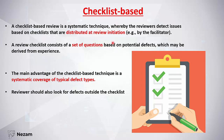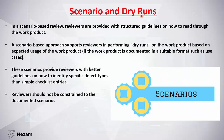The checklist-based review is a systematic technique where a checklist is distributed at review initiation — the second step of the review process — for example by the facilitator. The checklist contains questions based on potential defects derived from experience. During review, reviewers try to find the answers to these questions and identify the defects listed. The advantage is systematic coverage of typical defect types. Reviewers should also think outside the checklist and look for defects beyond it.